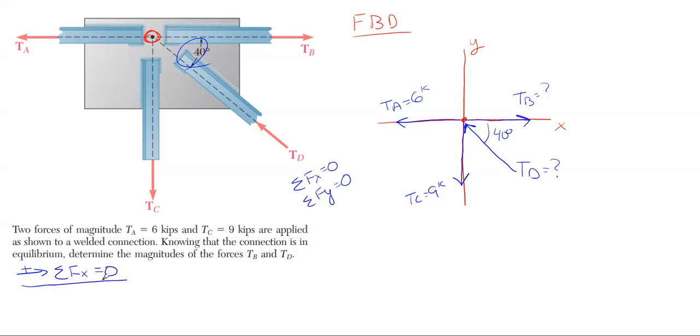Starting with TA, it is minus 6. It is 100% in the X direction. Then we have TB, which is unknown. It is acting to the right, so it is positive. No cosine or sine needed because it's 100% in the X. TC we're not going to include in the X equation because it's 100% vertical, no component in the X direction, so leave it out.